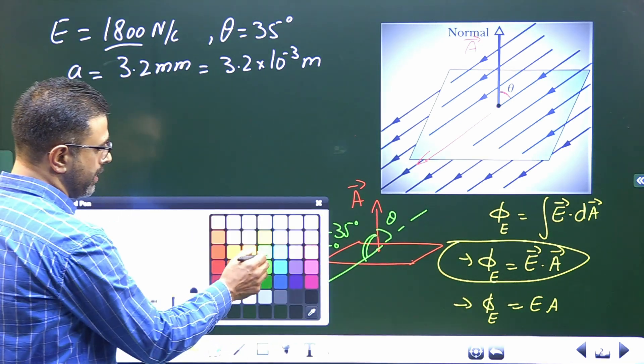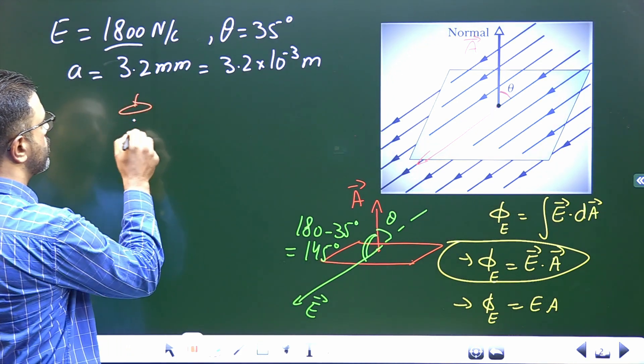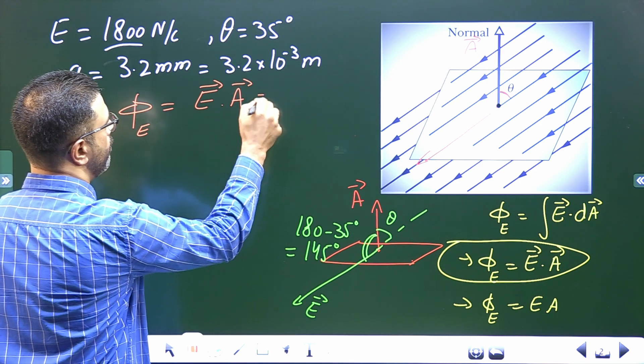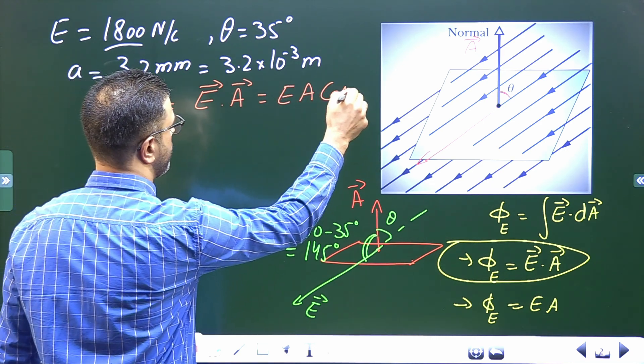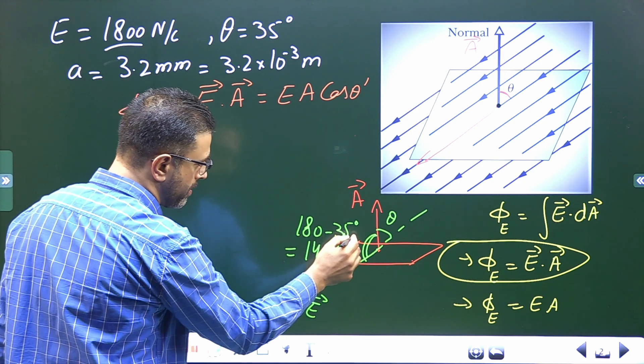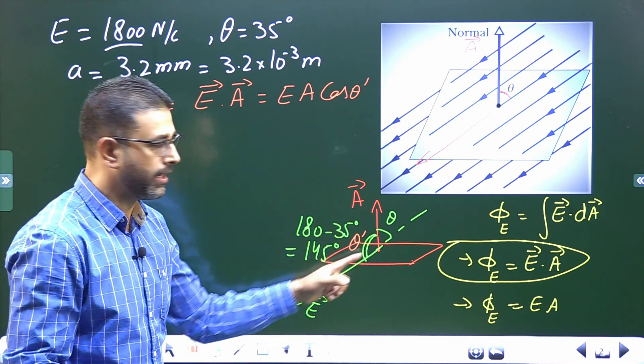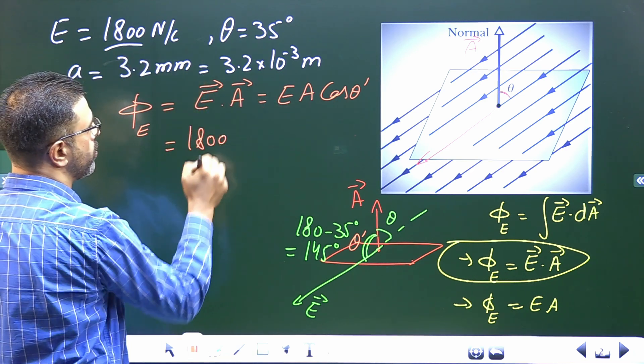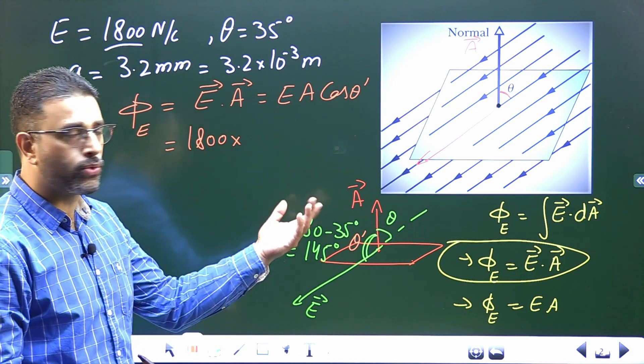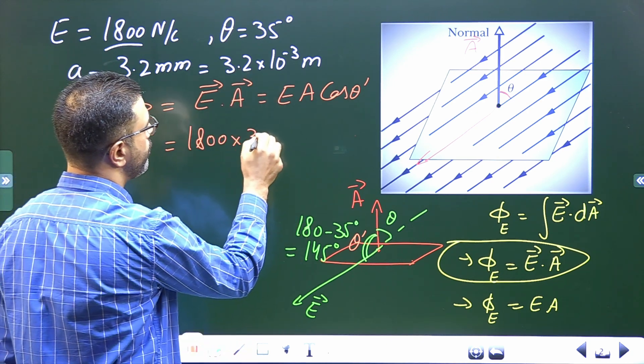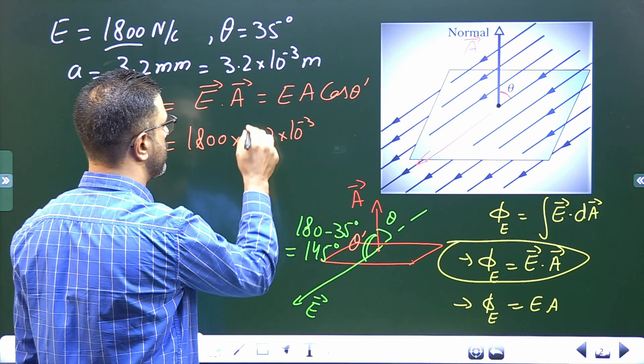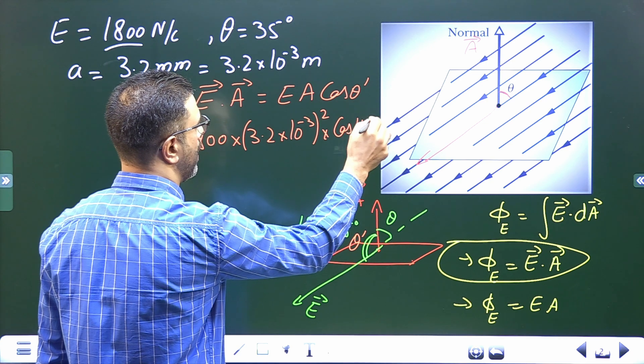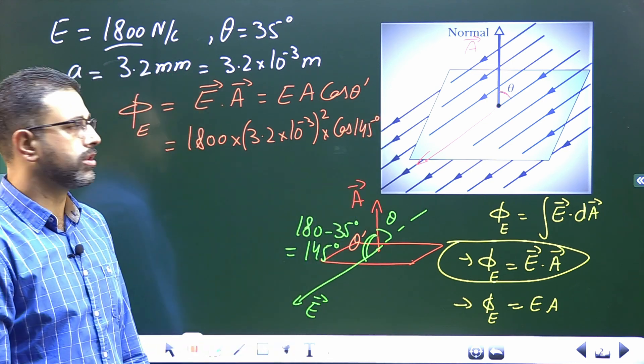So let's use that equation. Flux through the given surface, this one is E dot A, which is EA cosine of theta. Theta prime, I'll call this, because this is angle between direction of field and direction of area, not this one. Now, electric field is 1800 Newton per Coulomb. Then area is 3.2 into 10 to the power minus 3 meter square, into cos of 145 degrees.